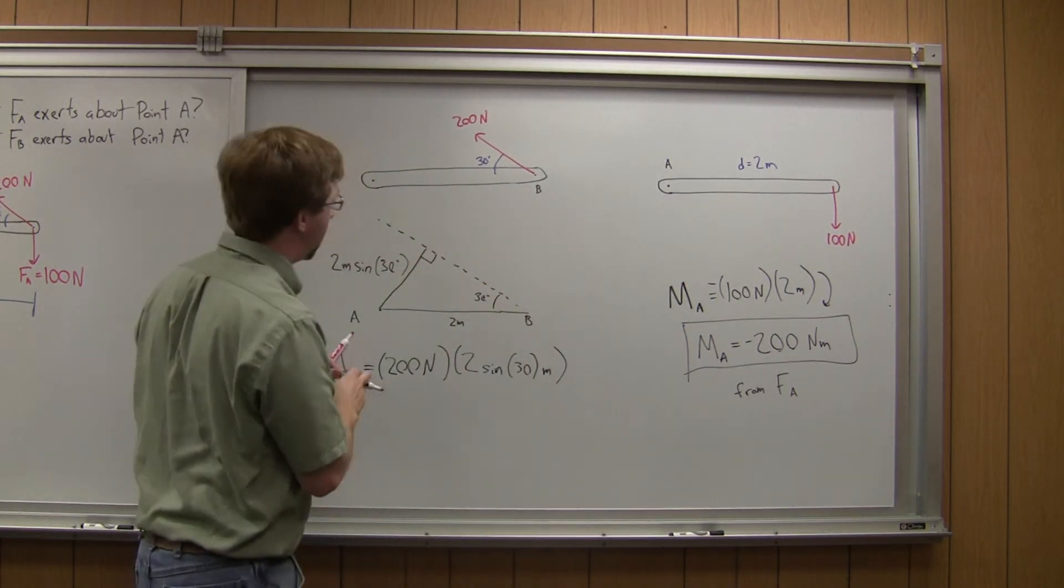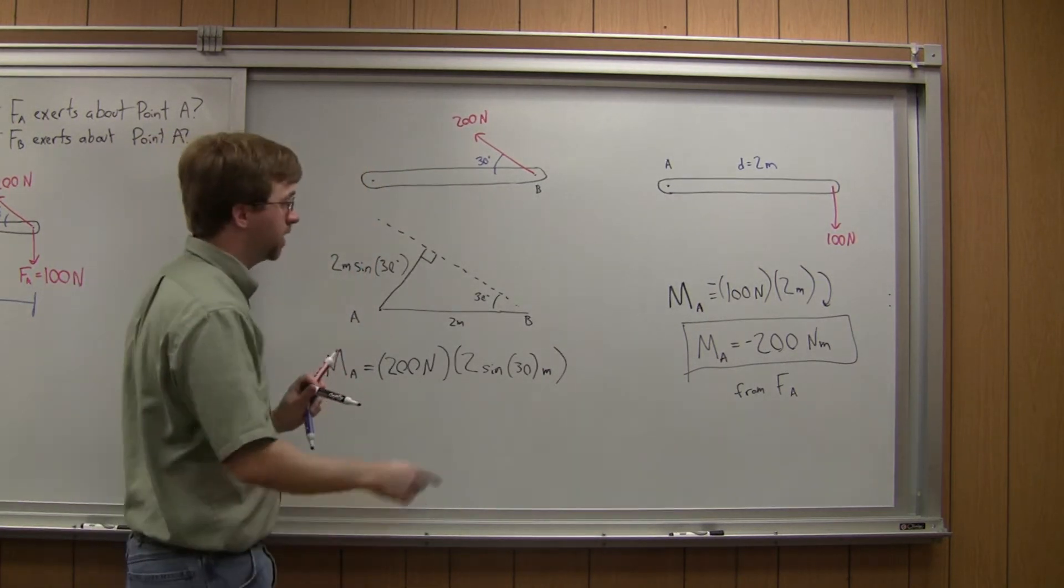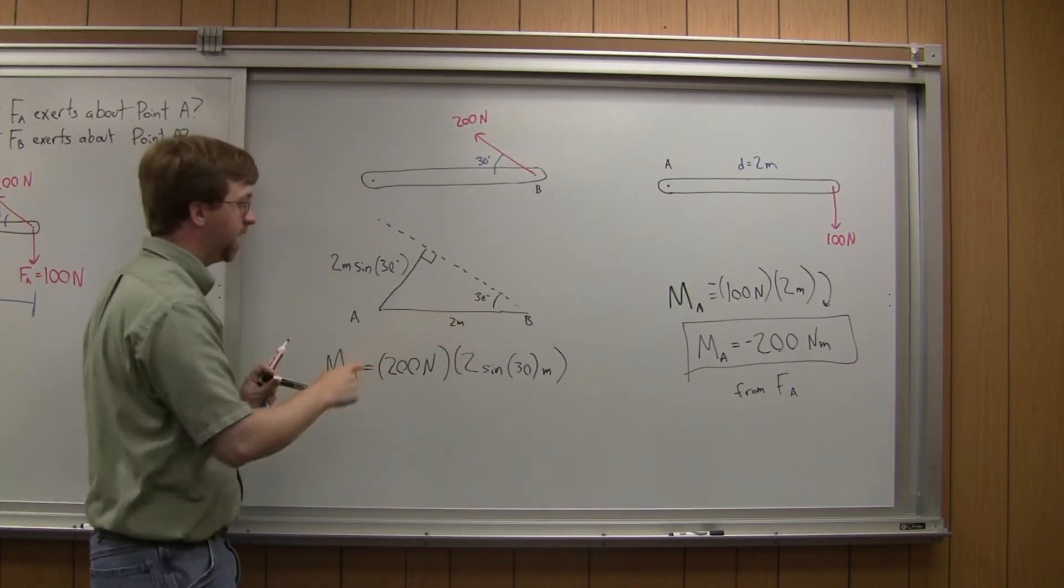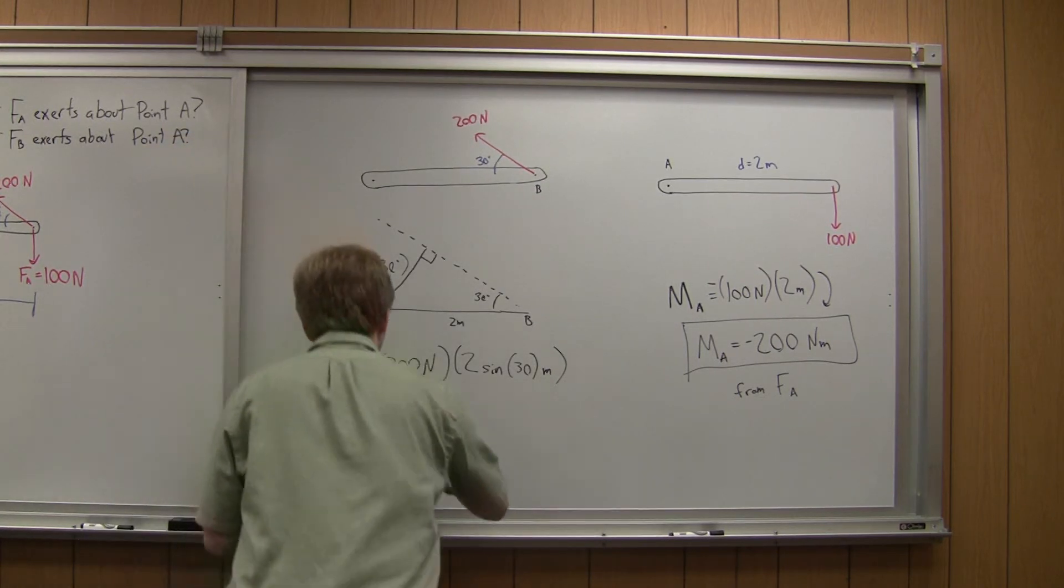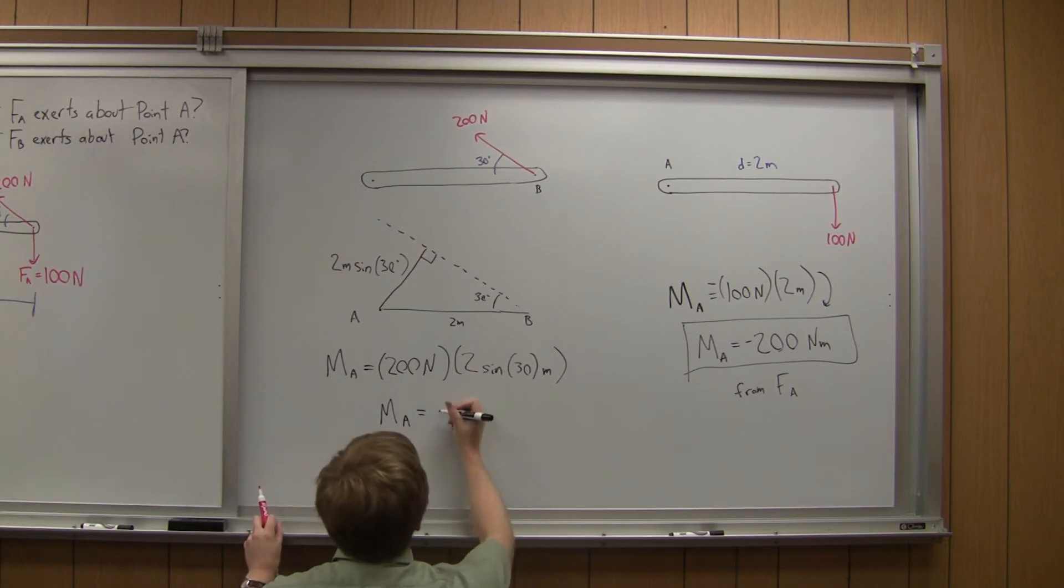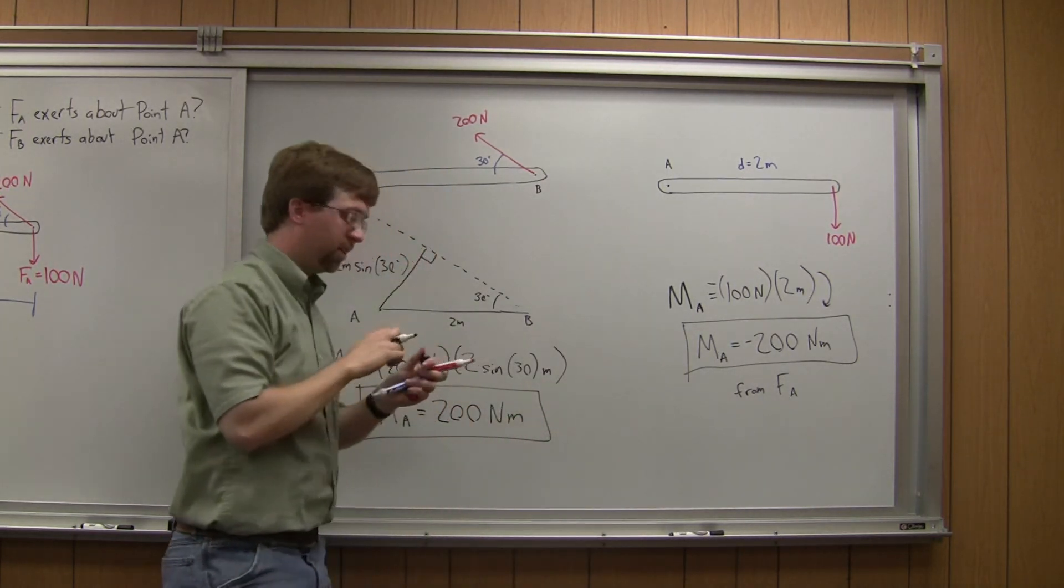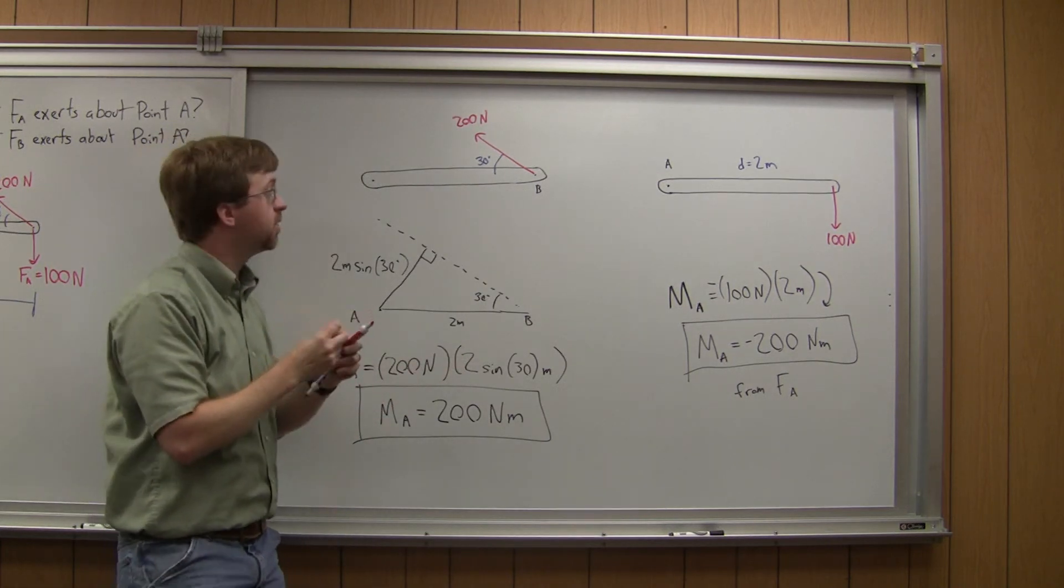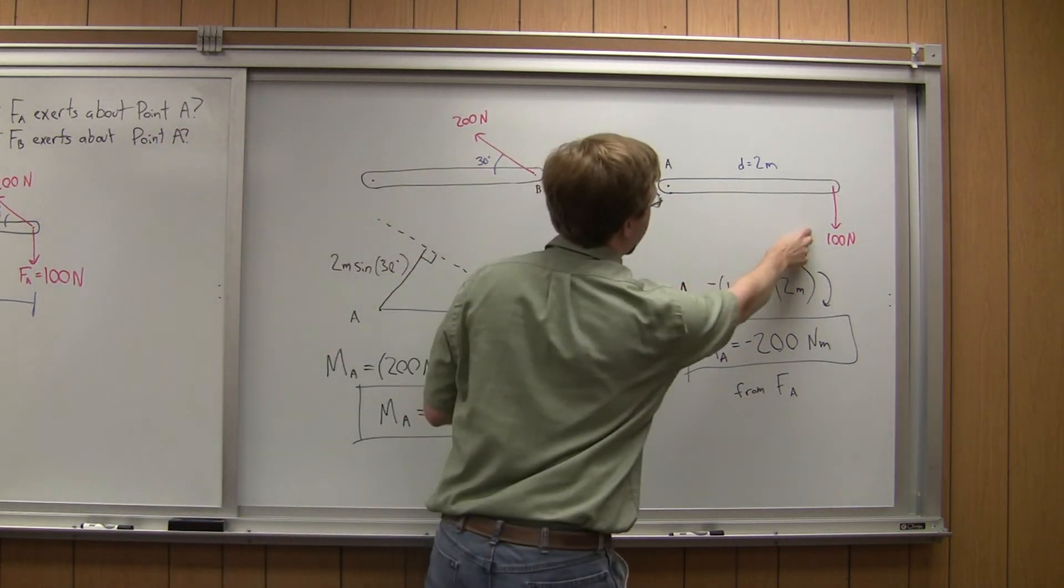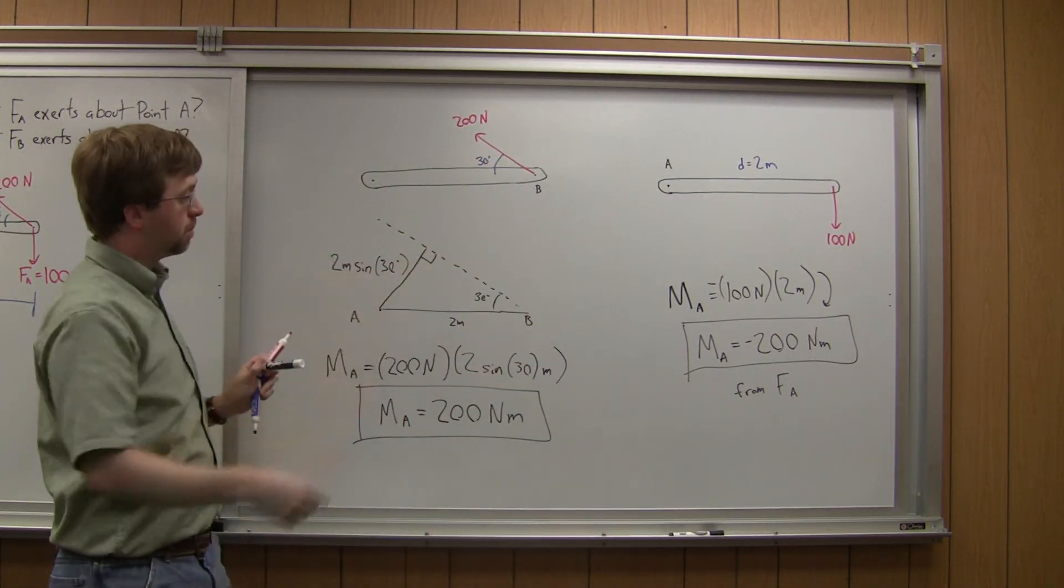And this is going to cause a counterclockwise rotation. That's a positive moment, so it's the opposite of this. We have no negative sign there. So MA, if you solve all this out, is going to be equal to positive 200 newton meters. And so that's exactly the opposite. So these two things, if we had, say this is a cable, and this is the weight on the end of that arm, this thing would be in equilibrium, because there are two equal and opposite moments here.